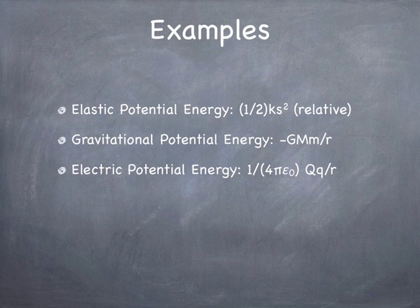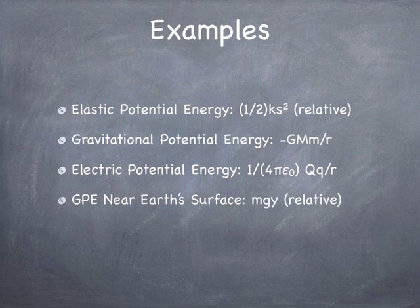We also have electrical potential energy, which is similar to gravitational potential energy but using Coulomb's Law, and this also goes to zero at infinity. If we're using gravitational potential energy only near the Earth's surface, we can use the approximate relationship MGY, where Y equals zero at some chosen reference point. What it boils down to is you can pick the zero of potential energy wherever you like. Many formulas choose zero at infinite separation, but sometimes it's convenient to pick a different zero — like for elastic potential energy of a spring or gravitational potential energy near the Earth's surface.